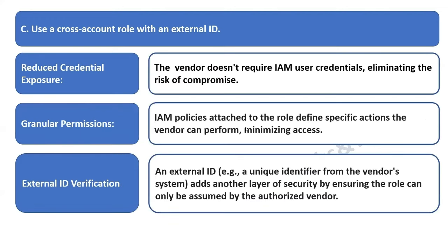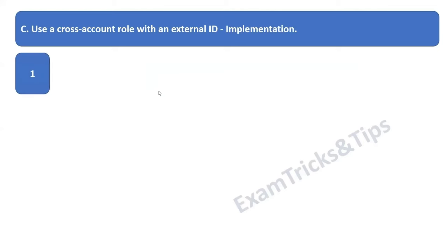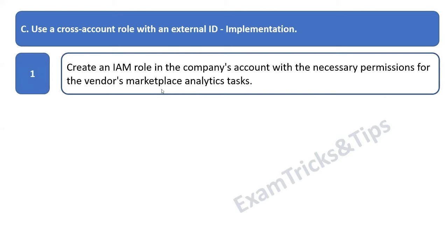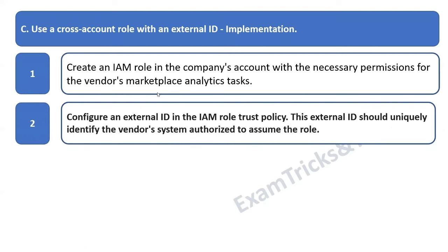Here's how to implement this solution. Step one: create an IAM role in the company's AWS account with the necessary permissions for the vendor's marketplace analytics task. Step two: configure an external ID in the IAM role trust policy — this external ID comes from the vendor's system and should uniquely identify the vendor system authorized to assume the role. Step three: share the role ARN with the vendor. The vendor can then use the AWS SDK or AWS CLI to assume the role using the external ID, gaining temporary and secure access to the company's resources with permissions defined in the role policies.